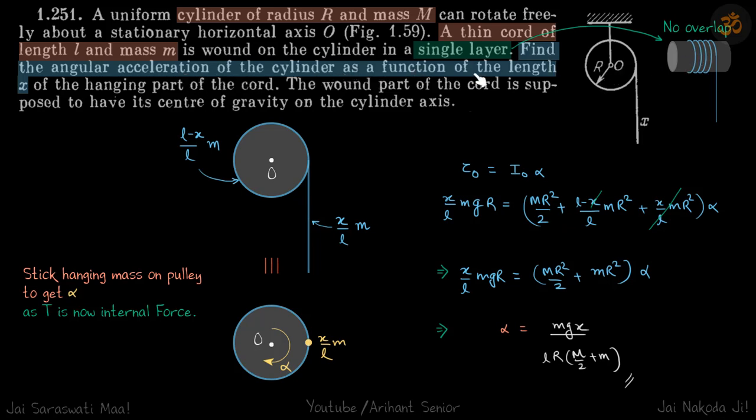Find the angular acceleration of the cylinder as a function of length x of the hanging part of the cord. When the x part is hanging, let's calculate what will be the force due to that, and that is the force that's going to turn the cylinder.